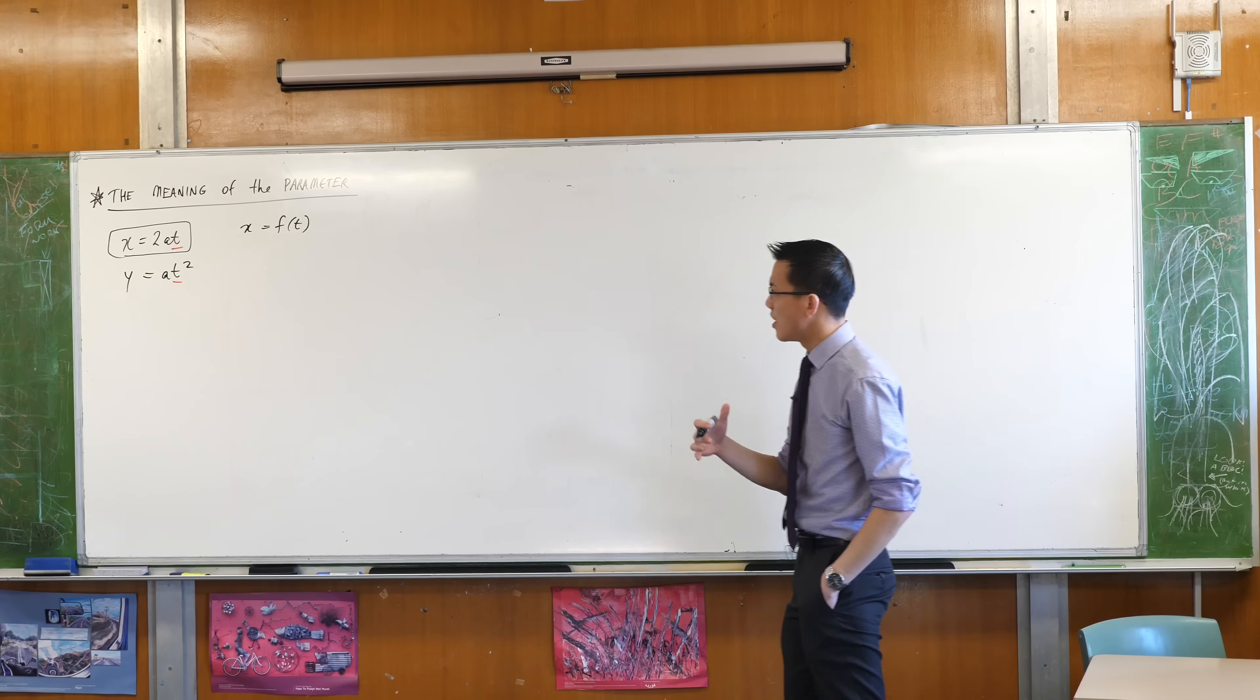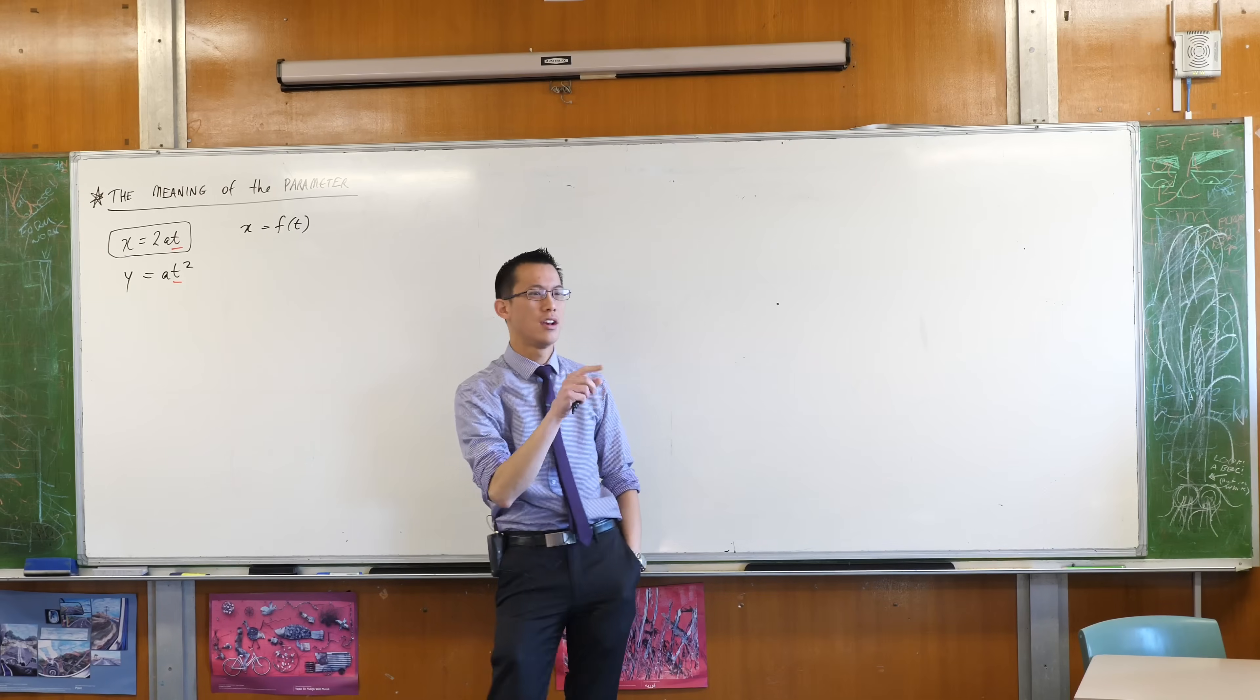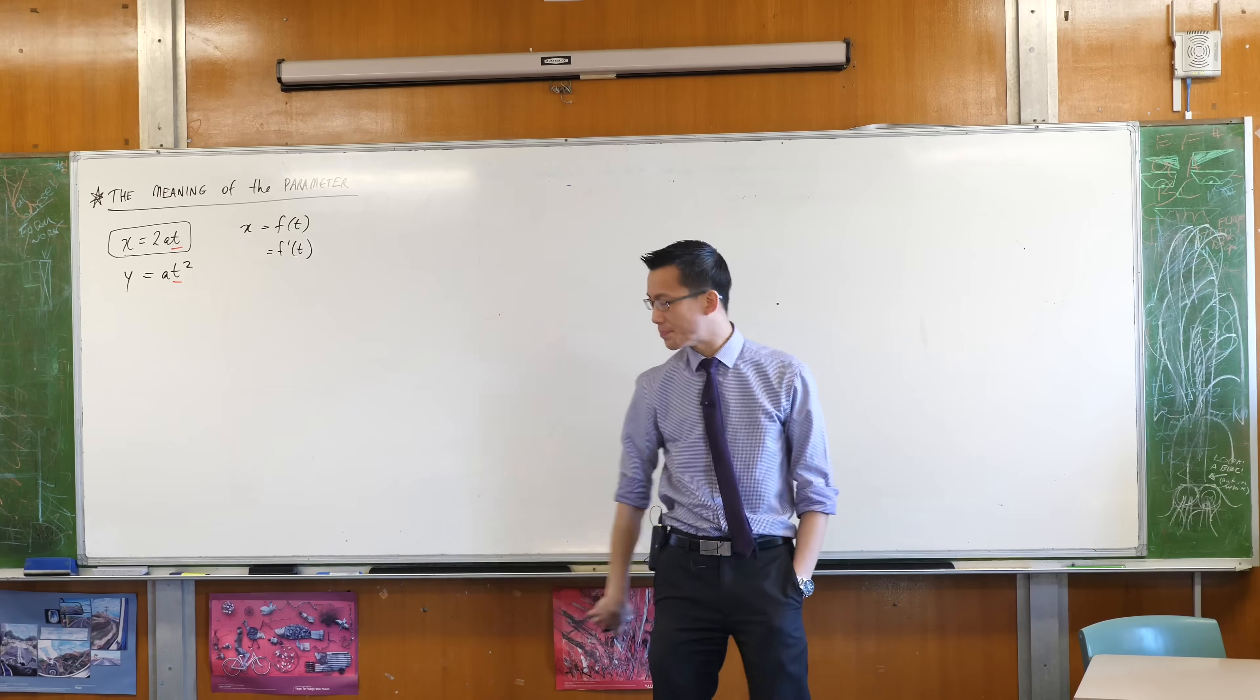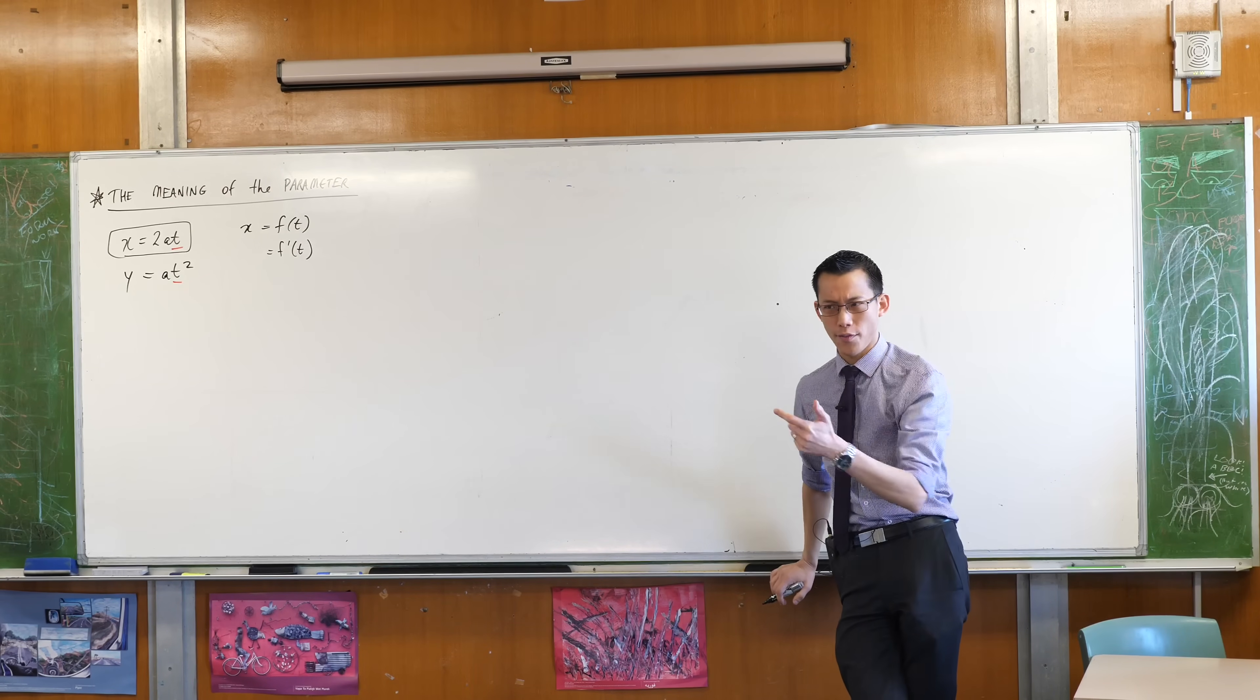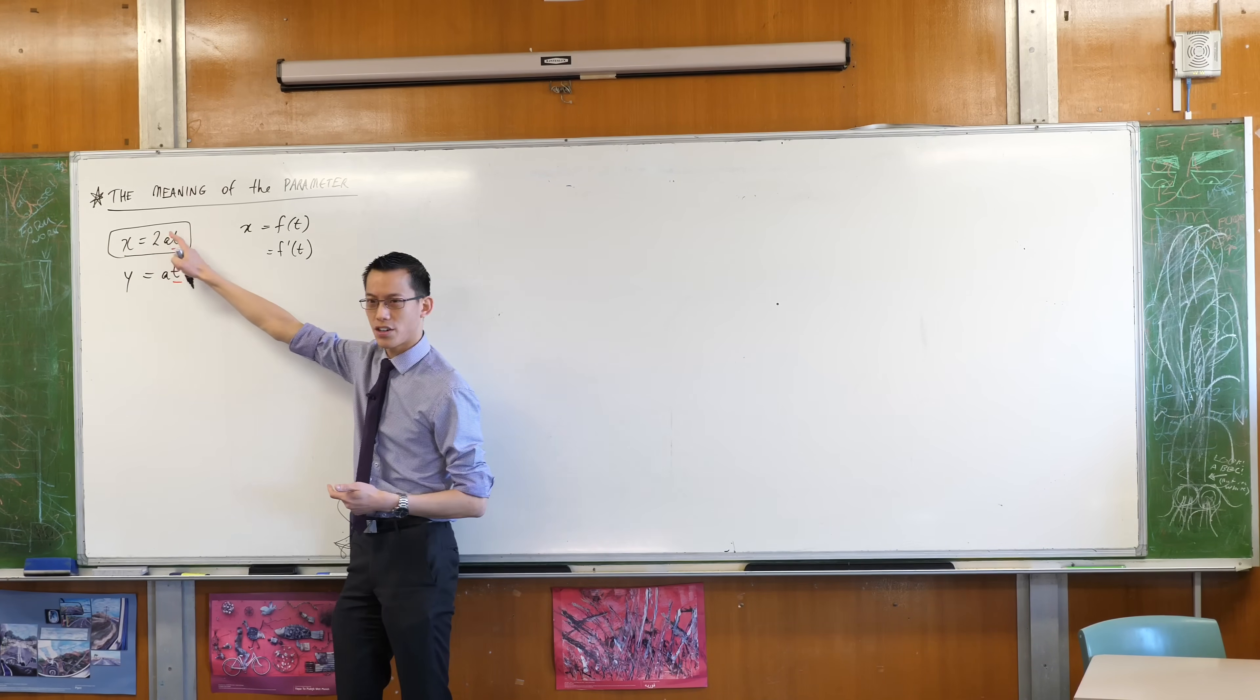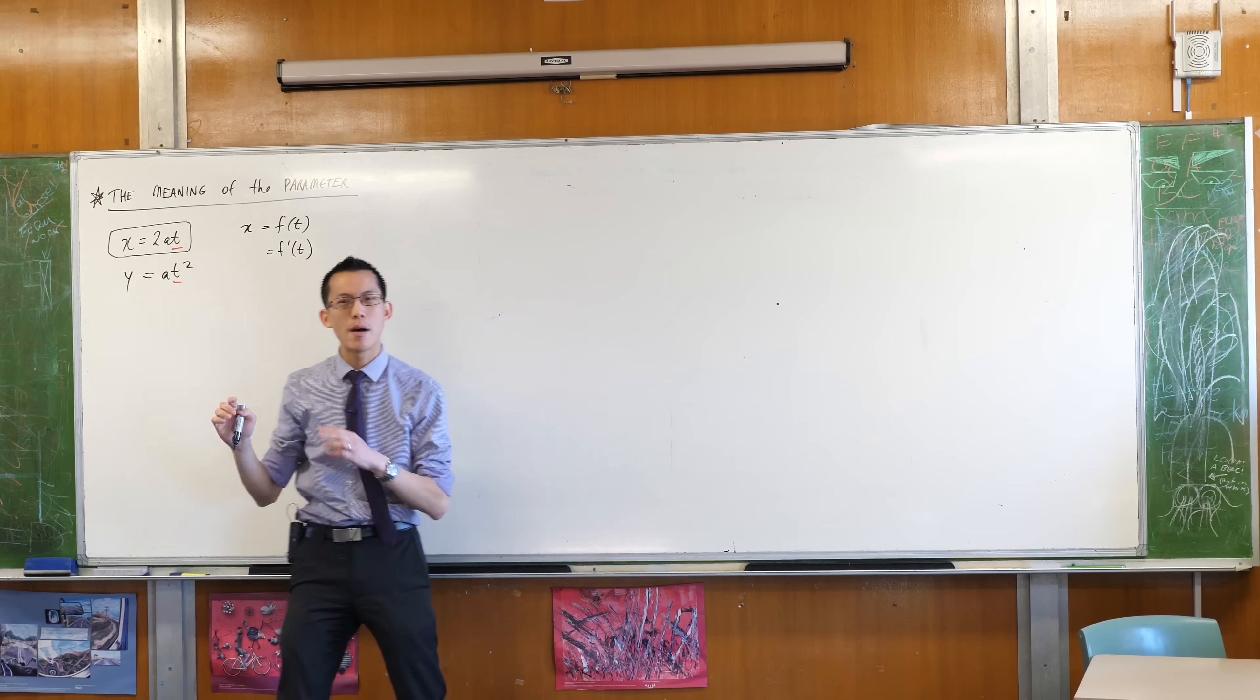Now what you've got is X as a function of T. X is a function of the parameter, right? Which means that we can differentiate this thing. Now, what would the right hand side look like when we're using this function notation? What does it look like when we differentiate this? We would normally write that as F dash T. You know, F turns into F dash. When you have the left hand side though, it looks a little bit different from what you would expect because the variables are different, right? We're used to having Y as a function of X.